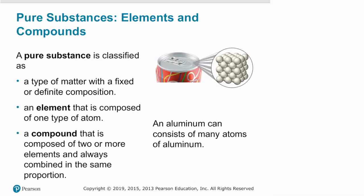A pure substance is classified as a type of matter with a fixed or definite composition. An element that's composed of only one type of atom, or a compound that is composed of two or more elements and always combines in the same fixed definite proportion.